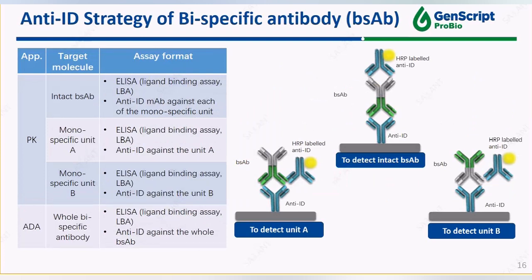Similarly, for the case of a bispecific antibody, if you want to detect the intact molecule, we recommend to use an anti-ID against one of the monospecific units paired with another anti-ID specific to the other monospecific unit. But if you just want to know either one of the units, anti-ID against either unit is enough.